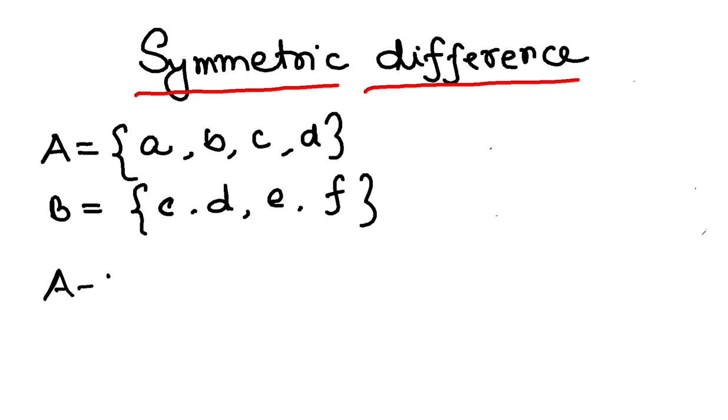So what is A minus B? Elements in A but not in B. Which are the elements? a and b. And what is B minus A? Elements in B but not in A. Which are the elements? e and f.